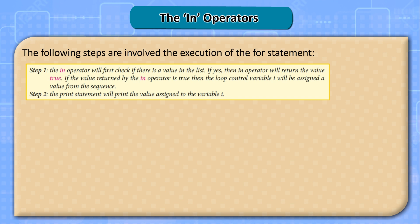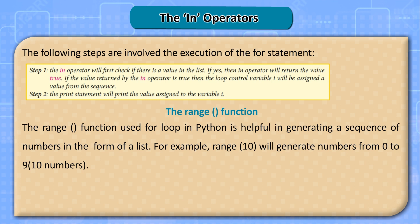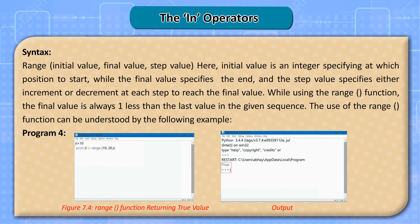The range function used with for loop in Python is helpful in generating a sequence of numbers in the form of a list. For example, range(10) will generate numbers from 0 to 9 — 10 numbers. Syntax: range(initial value, final value, step value). The initial value is an integer specifying at which position to start, the final value specifies the end, and the step value specifies either increment or decrement at each step to reach the final value. When using the range function, the final value is always one less than the last value in the given sequence.